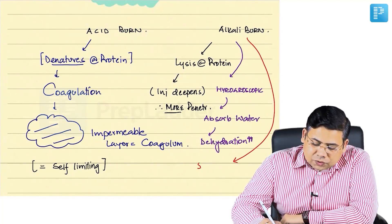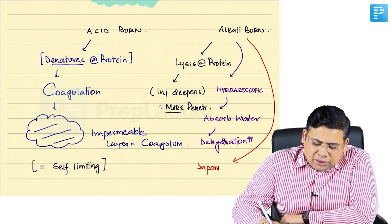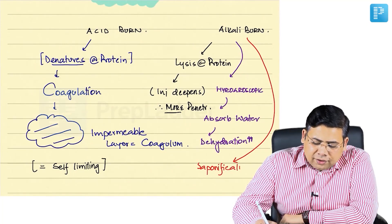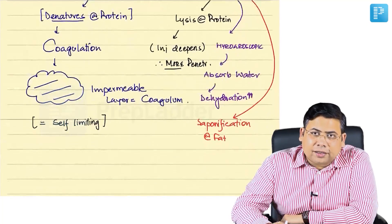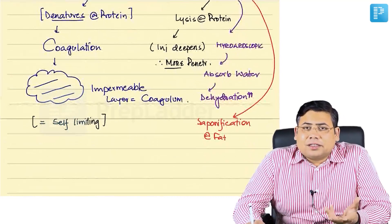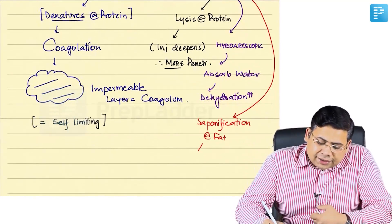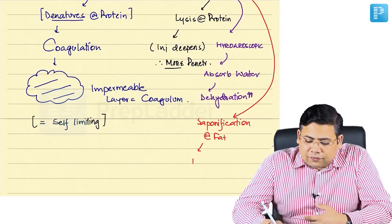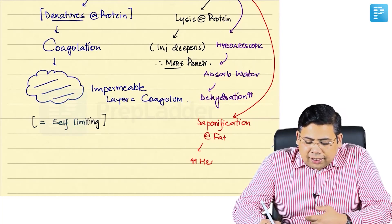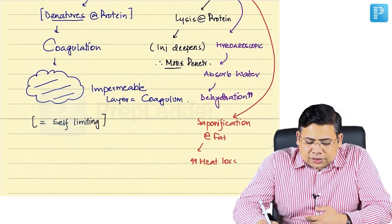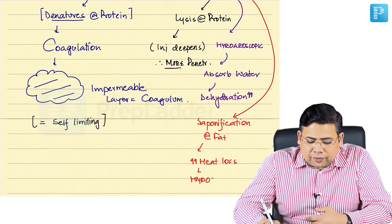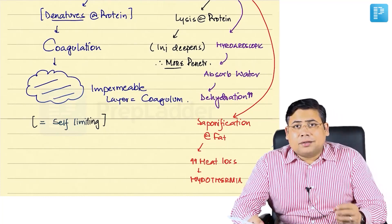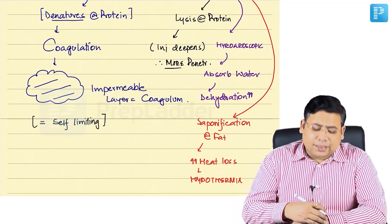The third important point is that alkalis cause saponification of fat. Since they cause saponification, they emulsify the fat, resulting in increased heat loss, which leads to hypothermia. These multiple factors make alkali burns more dangerous than acid burns.